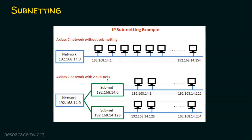Now let's see the same class C network with two subnetworks. Using the same network address 192.168.14.0, instead of a single network, we will create two logical networks. There are 256 IP addresses possible, so we break this into two equal halves: 128 IP addresses in one network and 128 in the other. Subnetwork one has network address 192.168.14.0, and subnetwork two has network address 192.168.14.128. From 0 to 127 belongs to the first network, and from 128 to 255 belongs to the second.